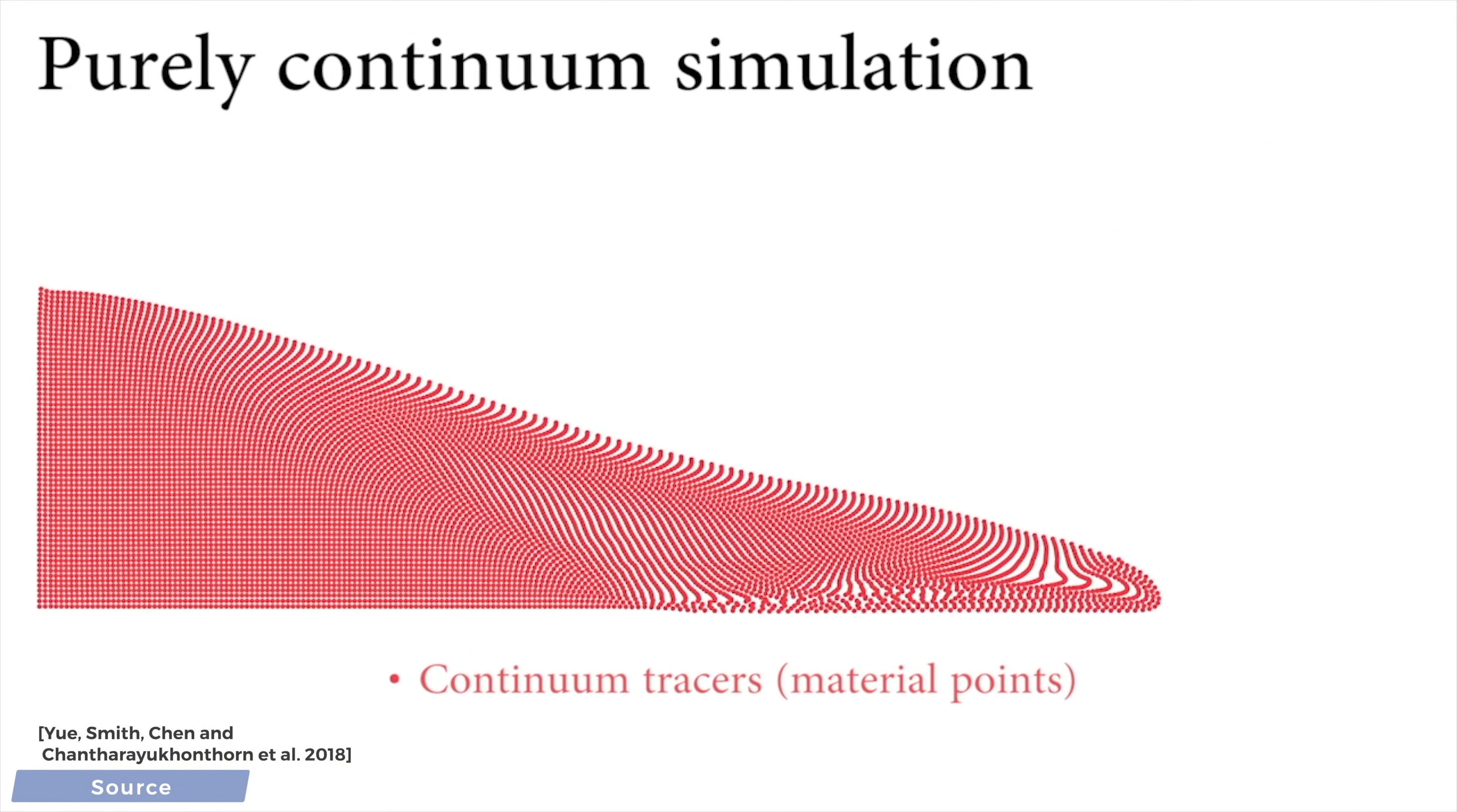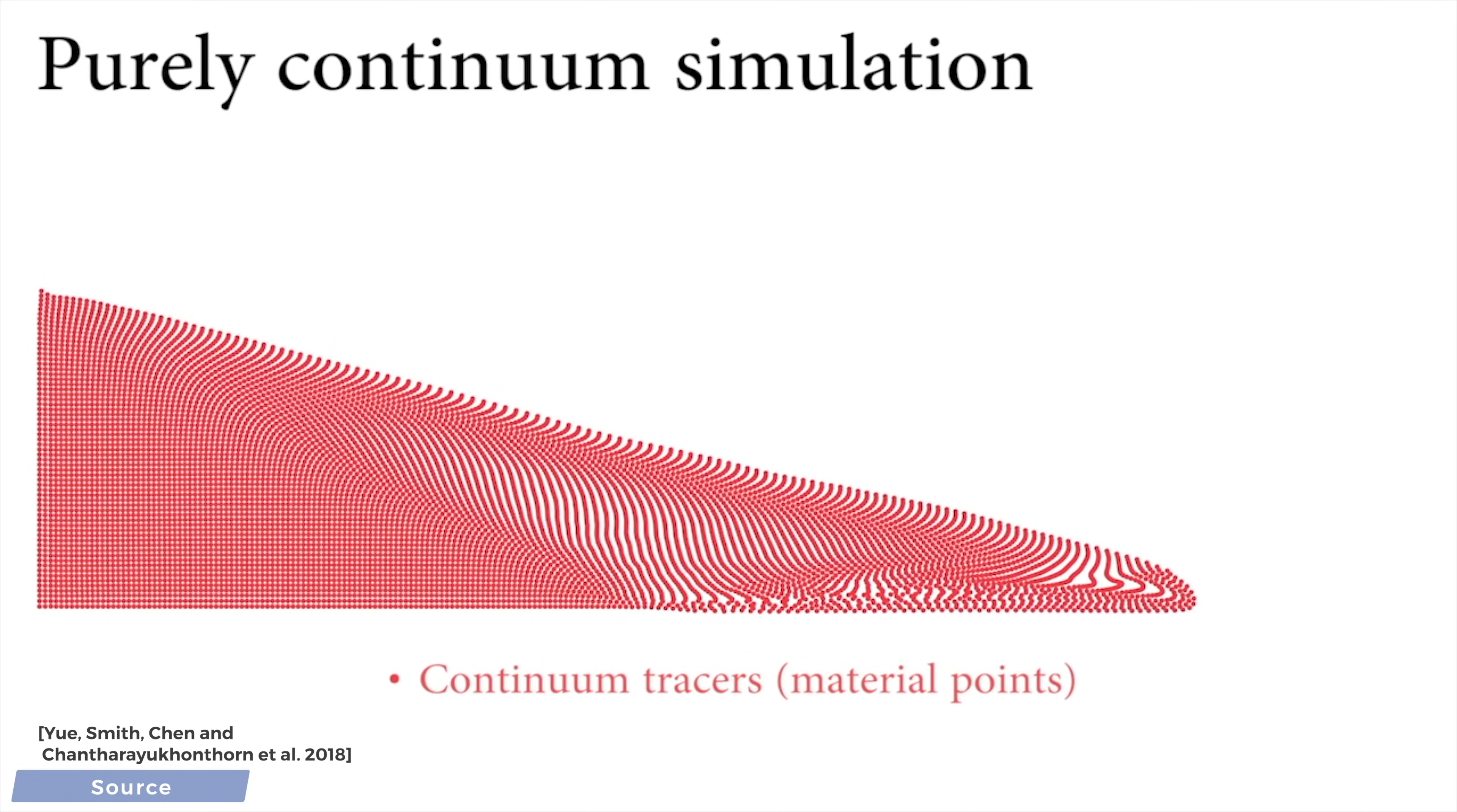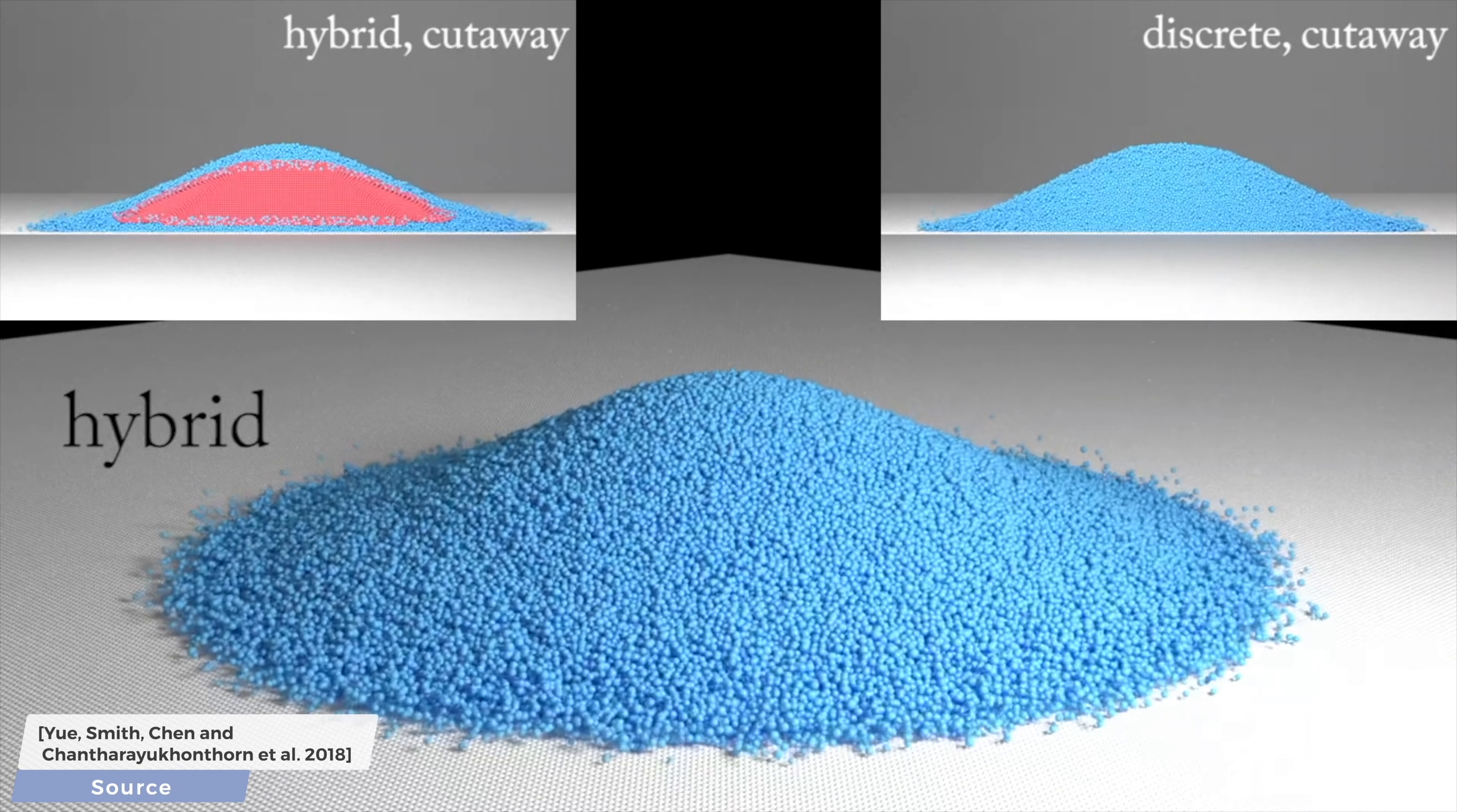To work around this limitation, continuum methods were invented, which do the exact opposite by simulating all of these particles as one block, where most of the individual particles within the block behave in a similar manner. This makes the computation times a lot friendlier. However, since we are not simulating these grains individually, we lose out on a lot of interesting effects such as clogging, bouncing, and ballistic motions.